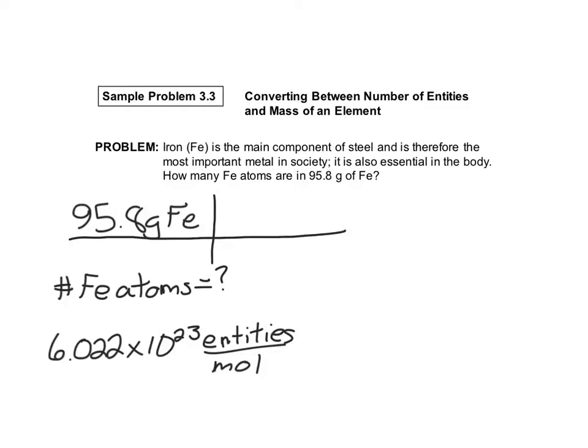Iron is number 26 on the periodic table. And I'm looking and it says that it weighs 55.85 grams of iron in one mole of iron. Now, notice I put grams on the bottom because I had grams on the top. So let's see here. I've got grams divided by grams. That's going to cancel and equal one.